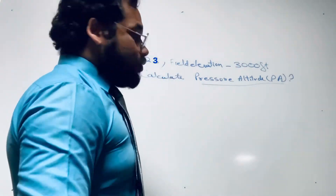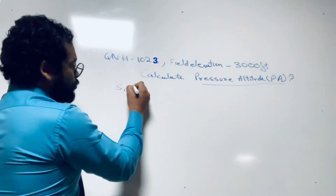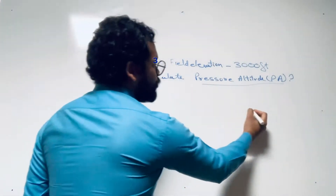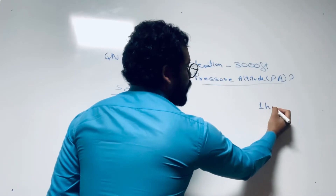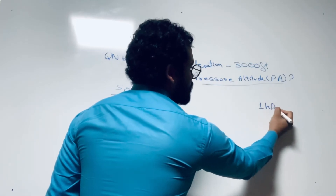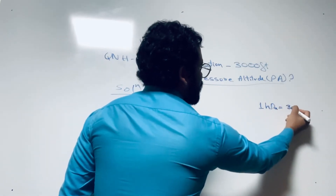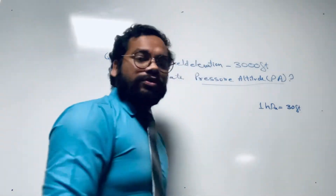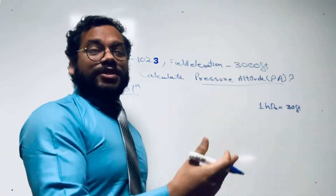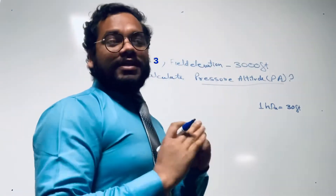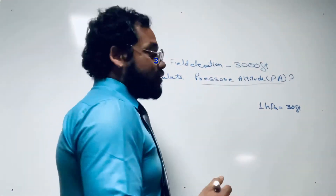So how do we calculate the pressure altitude? We should know that a difference of one hectopascal is equivalent to 30 feet. In some books it is given as 27 feet, in some it is 28 feet, but approximately let's take it as 30 feet for the purpose of our calculations.